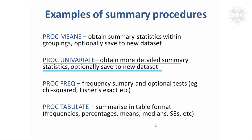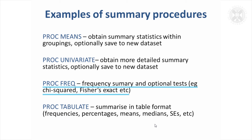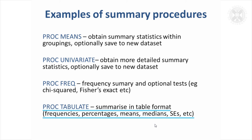PROC univariate gives you more detailed summary statistics, and you can get quantiles, confidence intervals, and various other things from PROC univariate. PROC freq is for getting out frequency summary statistics, and you can also do basic statistical tests such as the chi-squared test and Fisher's exact test with that procedure. And then PROC tabulate is a surprisingly powerful procedure — it produces summary statistics in tables, and you can customise these in various ways and get your means by any categorisation. So that's a useful procedure.